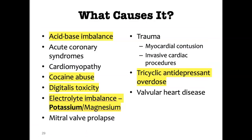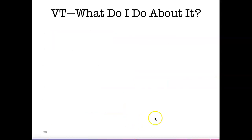Causes of ventricular tachycardia include acid-base imbalance, cocaine abuse, digitalis toxicity, electrolyte imbalance — specifically potassium and magnesium — and tricyclic antidepressant overdose. Other causes include myocardial infarction and valve problems.